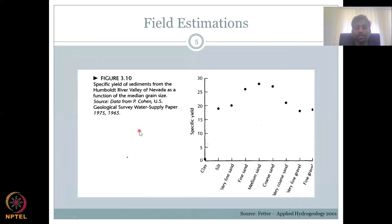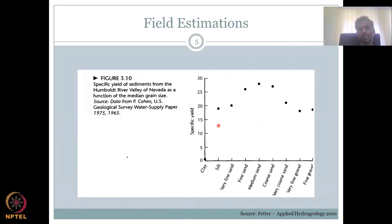Let's look at a field site sample: specific yield of sediments taken from the Humboldt River Valley of Nevada as a function of median grain size. What we see is specific yield is very low for clay and starts to increase as grain size increases — through silt, very fine sand, medium sand, coarse sand — and then comes down again through very coarse sand, very fine gravel, and gravel. The best material to drain water will be sandy soils.